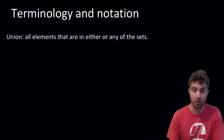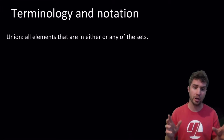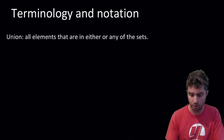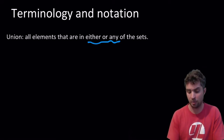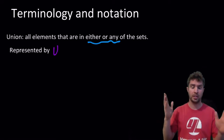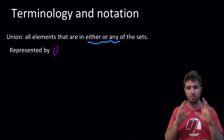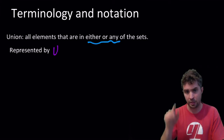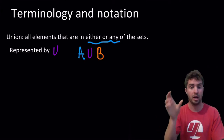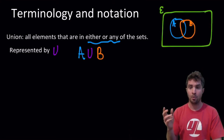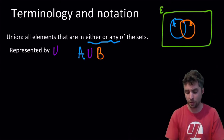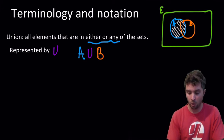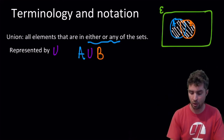More terminology and notation. A couple of big ones: the union, and in a minute we'll see the intersection. Unions are all the elements that are in either or any of the sets we're talking about, represented with a big U — U for union. You might say A union B, or the union of A and B. We can draw that with our Venn diagrams: two circles, one for A, one for B, and the union would be anything that's in A or anything that's in B — anything in one or the other or both.